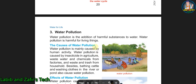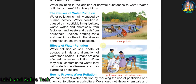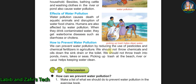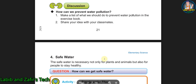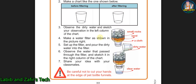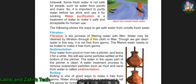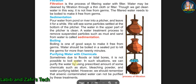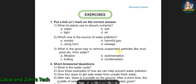Our next topic is water pollution. Here you will be able to know the causes of water pollution, the bad effects of water pollution, and how we can prevent water pollution. The fourth topic is safe water — how we can make safe water. There are some water purification methods: filtration, sedimentation, boiling, and purifying water with chemicals.